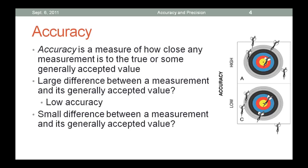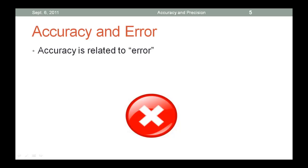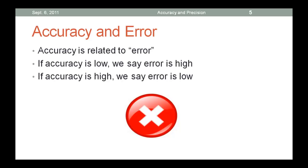You can see it demonstrated that the high accuracy is where it's closer to the measurement and its accepted values. Accuracy, yes, is related to error. If accuracy is low, we say error is high. If accuracy is high, we say the error is low.